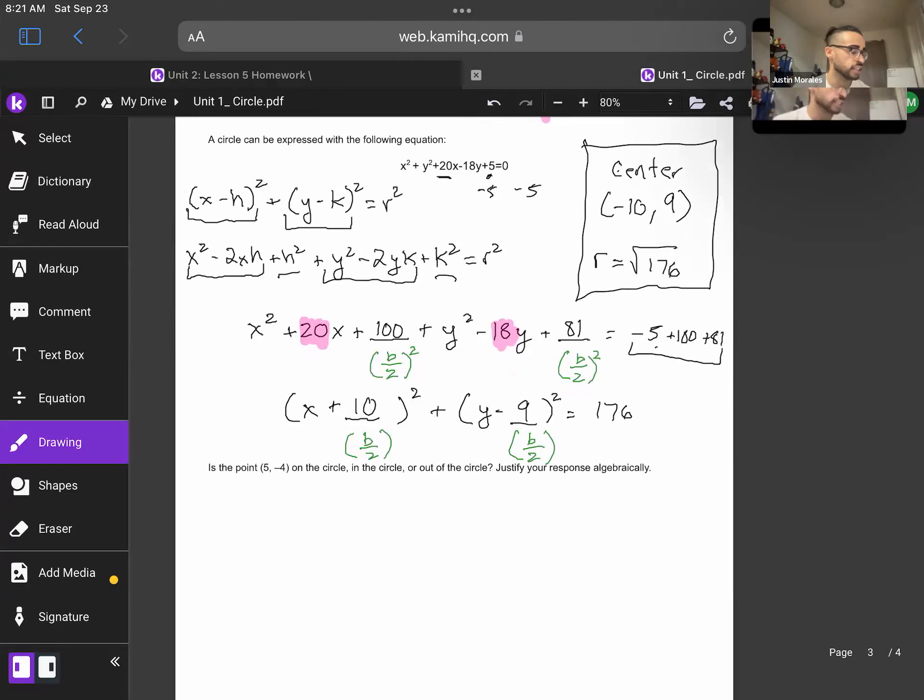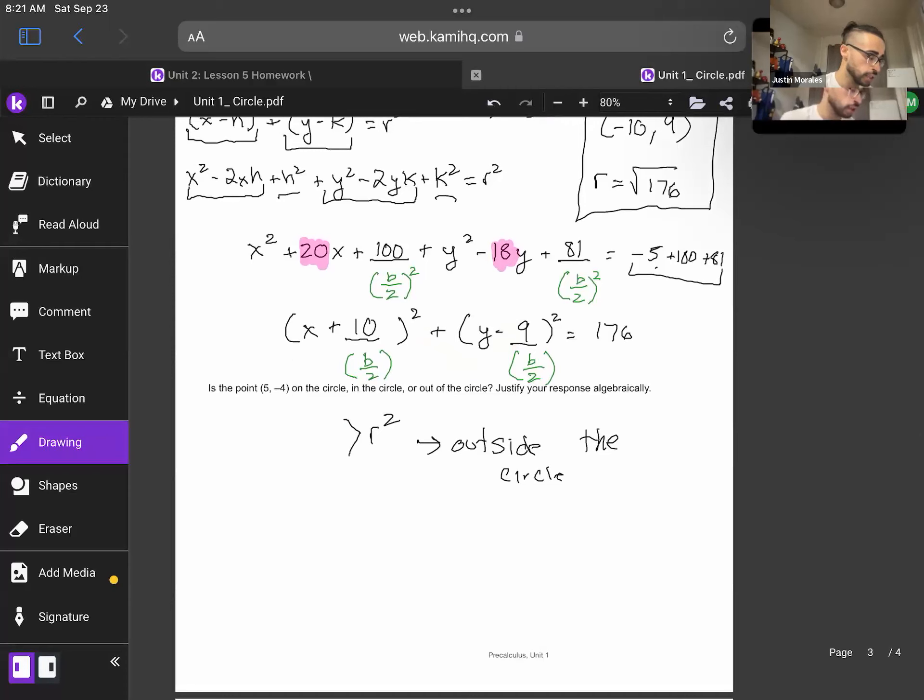Now for the next part, they're asking, is the point (5, -4) on the circle, in the circle, or out of the circle. Justify your response algebraically. So the way we utilize that is we're going to take that point and plug it into the equation of our circle. And when we plug it in, if it is greater than r², that means it is outside the circle. If it is less than r², that means it is inside the circle. And if it's equal to r², that means it is on the circle.